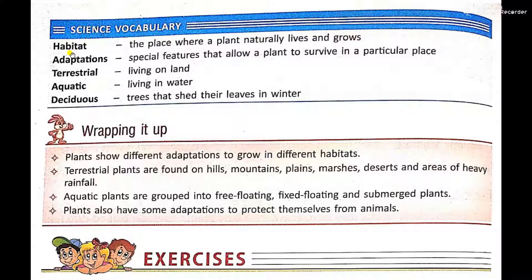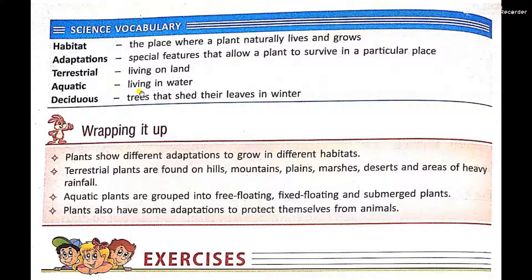Now some new words learned in this chapter. Habitat: the natural place where plants naturally grow — the natural home of any plant. Adaptation: special features that allow plants to survive in a particular place. Terrestrial: living on land — plants which grow on land are called terrestrial. Aquatic: living in water — plants which grow in water are called aquatic plants. Deciduous: a quality of some plants in which they shed their leaves during winter months; such plants are known as deciduous plants.